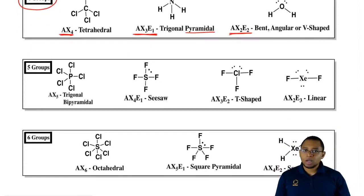If you have five groups around your central element, then it goes really crazy with the number of shapes that you could have. Here AX5 would mean that the central element has no lone pairs around it.